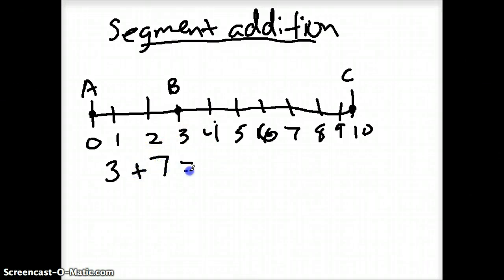And the distance from B all the way over to C is one, two, three, four, five, six, seven. So if I add them together, I should get ten. That's the total distance from zero to ten, from A to C is ten.